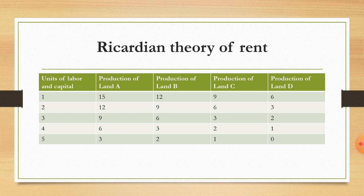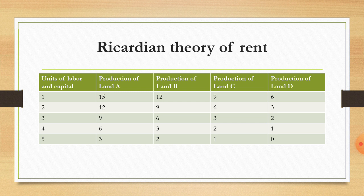B land پہ: پہلے unit سے 12 من، دوسرے سے 9، تیسرے سے 6 — یہاں stop کریں گے کیونکہ اگلے unit پہ 3 ہے جو loss ہے۔ تو B land پہ 3 units لگیں گے۔ پھر C land پہ: پہلے unit سے 9، دوسرے سے 6 — آگے نہیں جانا کیونکہ cost زیادہ اور revenue کم ملے گا۔ C land پہ 2 units۔ اور آخری زمین D پہ صرف ایک ہی unit لگایا ہوا ہے۔